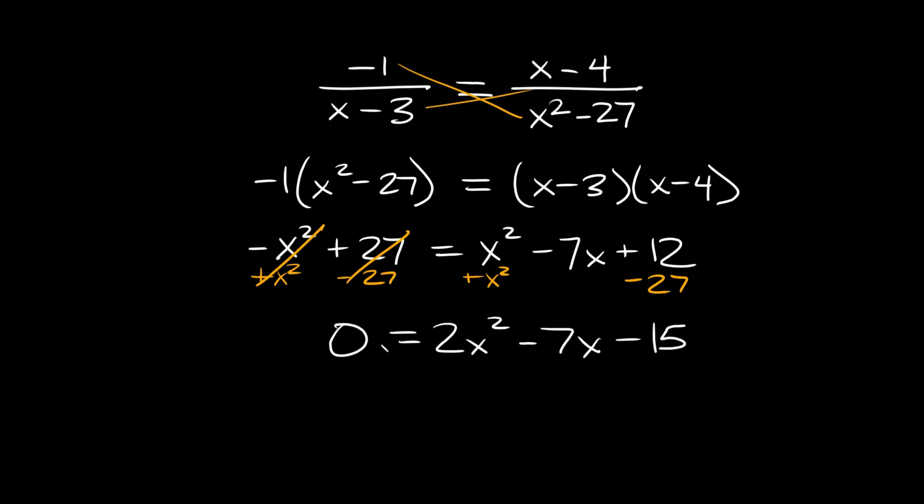Now that we have this quadratic set equal to zero we can factor this. So 2x squared we can break up into 2x and x, and then we need two numbers that multiply to negative 15. You might have to do some guess and check, but you'll get that we have a positive 3 here and a minus 5 here.